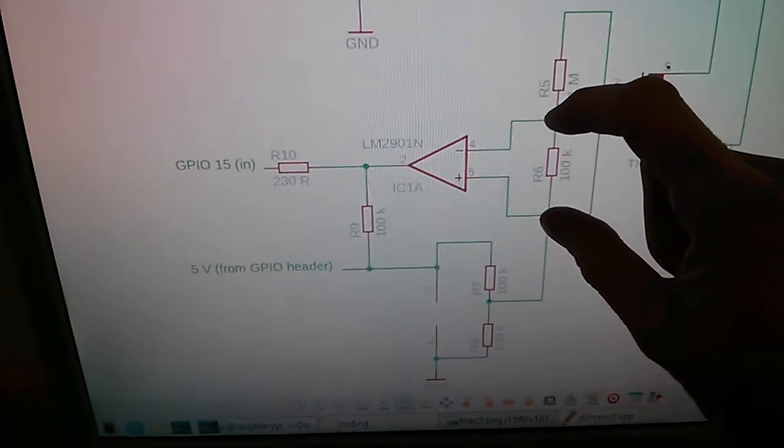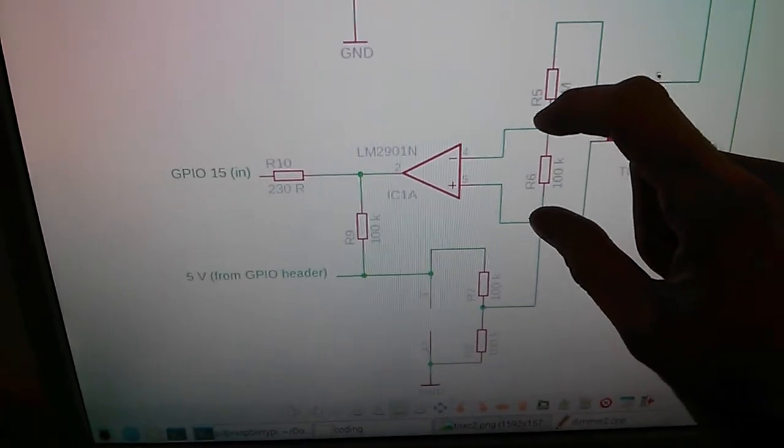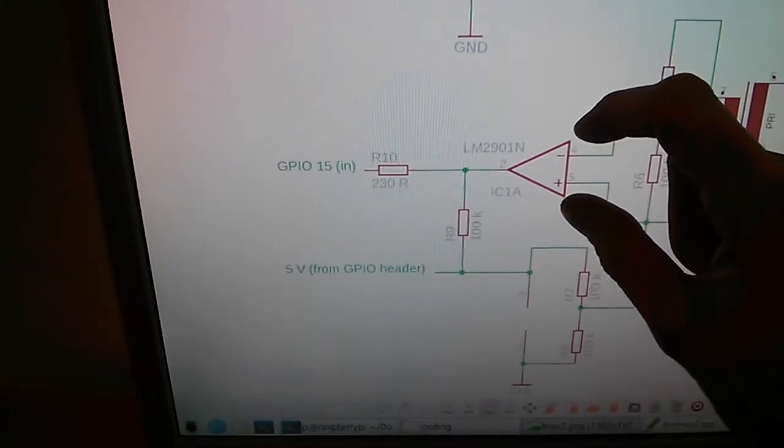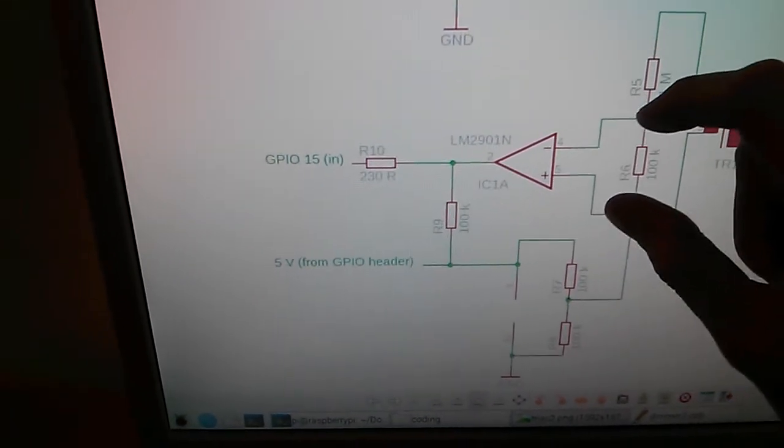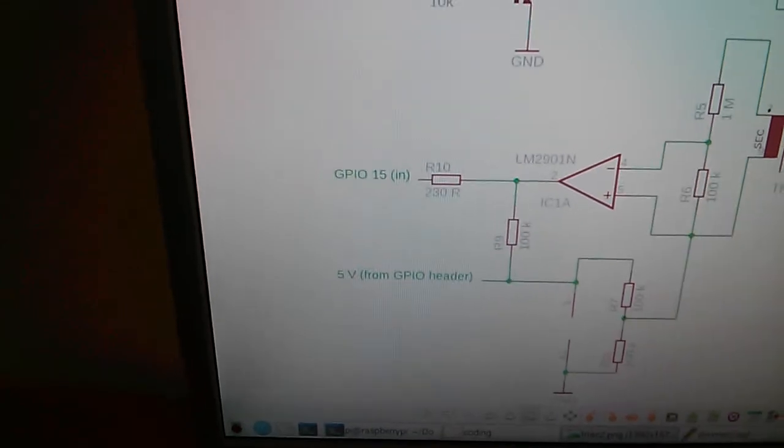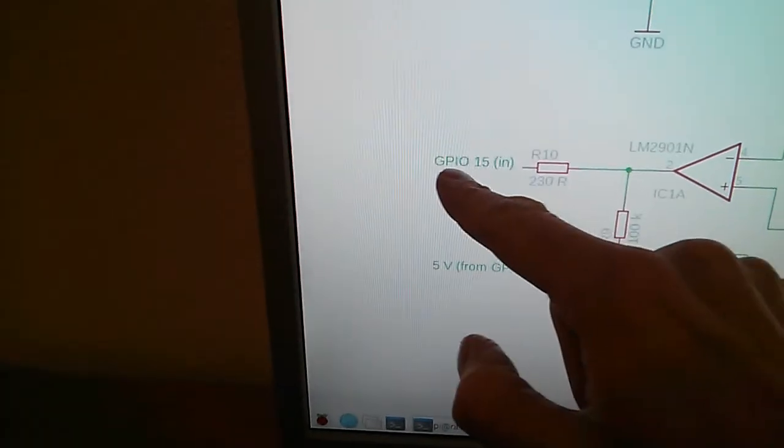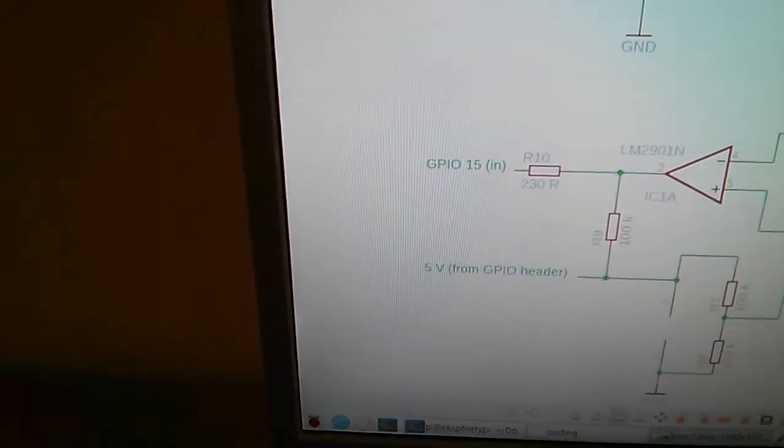And here through a voltage divider, I get a tiny sinusoidal voltage of a few volts peak to peak, which I'm feeding into a comparator IC, which converts it into a square wave signal that I'm feeding into one of the GPIOs of the Raspberry Pi.